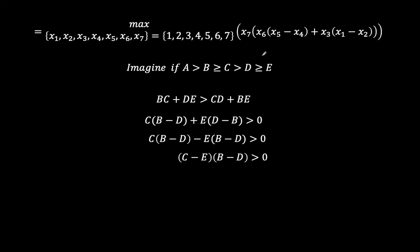So in essence, what this is telling us is that the combination of x6 and x5 minus x4 should be greater than x3 times x1 minus x2. So essentially, we're going to set x6 equal to 6, and possibly x5 minus x4 should be 5 minus 1 to give us the greatest difference, which is 4. So when you make that choice, then you get 6 times 4, which is 24.